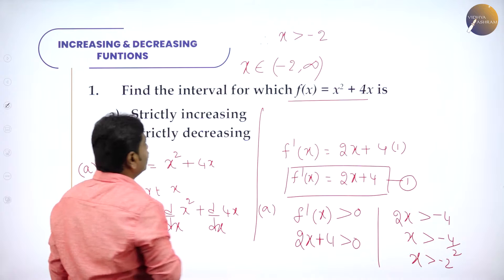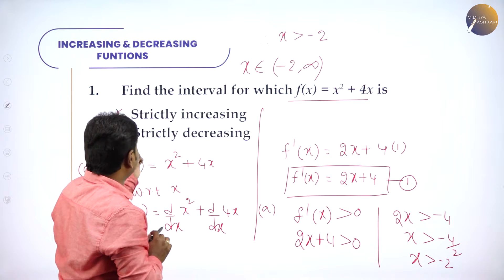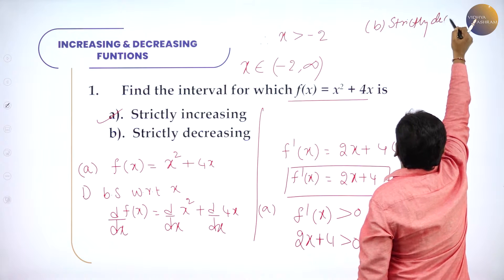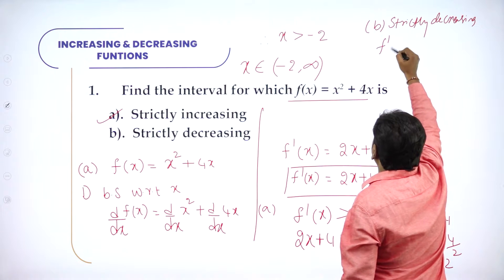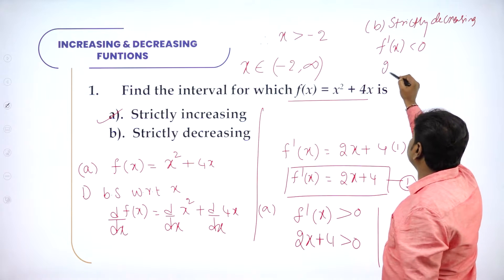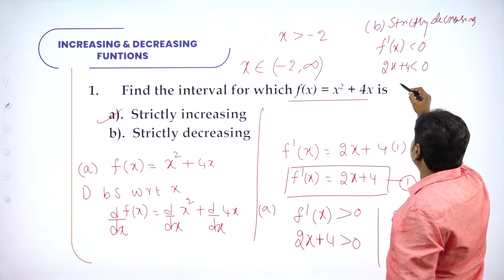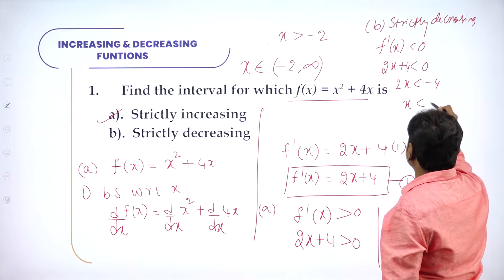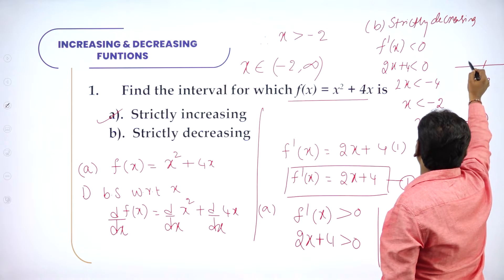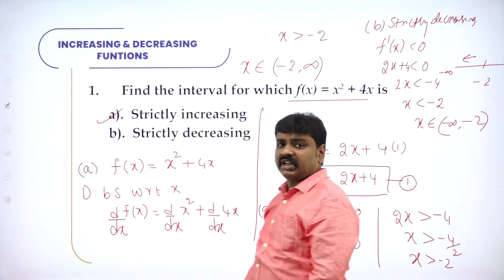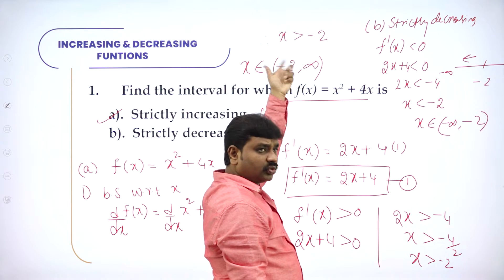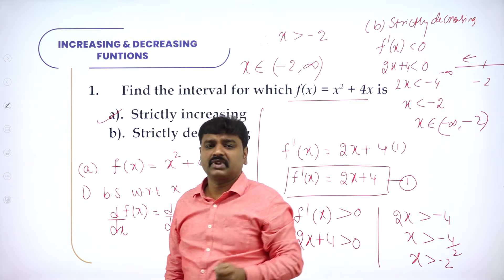So f(x) strictly increases on the interval (−2, ∞). Now for strictly decreasing: strictly decreasing means f'(x) less than 0. f'(x) is 2x + 4, so 2x + 4 less than 0, that is 2x less than minus 4, or x less than minus 2, so x belongs to (−∞, −2). Strictly increasing: solve f'(x) > 0; strictly decreasing: solve f'(x) < 0.